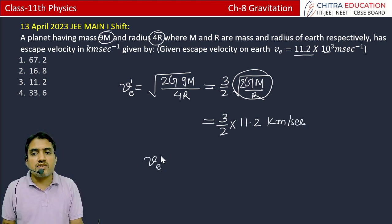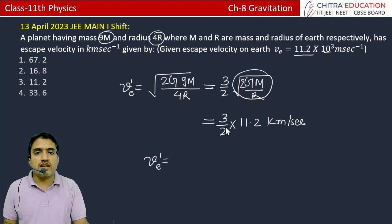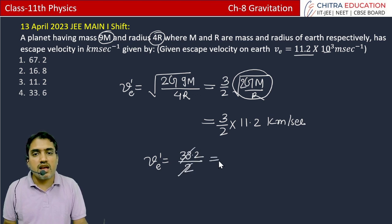So in this planet we will get its velocity. This will be 33.2 divided by 2. And if we cancel it, then how much will it be? 16.8 km per second.